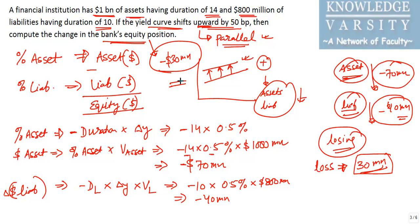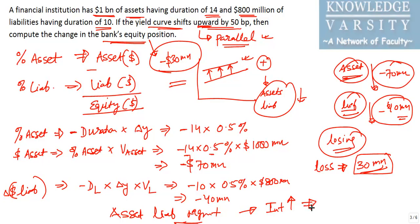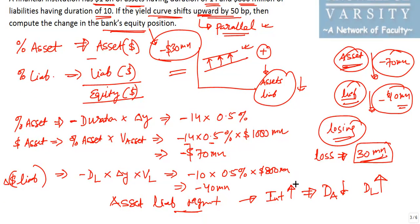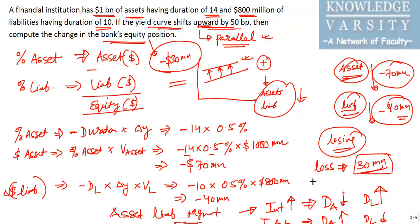In real life, banks conduct asset-liability management (ALM). When interest rates are expected to increase, banks should decrease the duration of their assets and increase the duration of their liabilities to avoid this kind of loss. Conversely, when interest rates are expected to decrease, banks should increase asset duration and decrease liability duration. That is what they should ideally be doing.